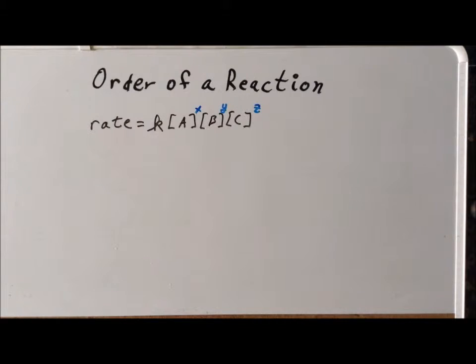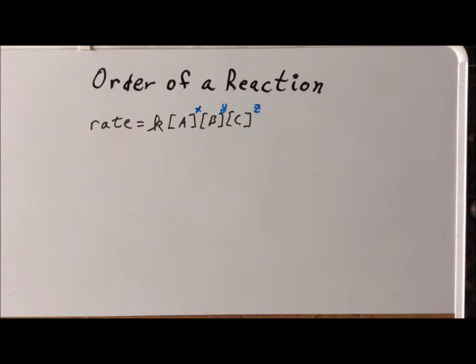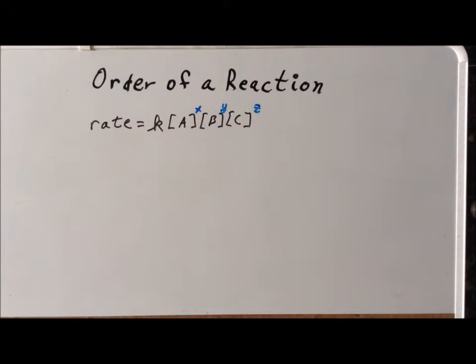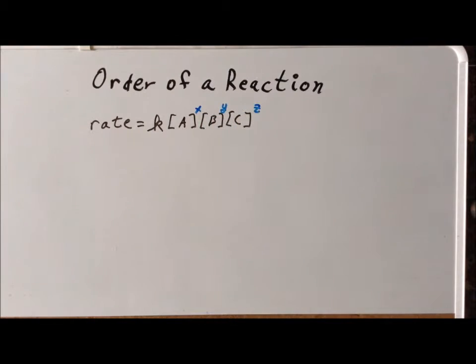It's important to note that the reaction order with respect to a particular reactant or to the entire reaction is an experimental concept. So the only way that we can find out the order of a reaction is by doing experiments. Now, the order of a reaction, if we know x, y, and z, we can compute that. We can just put x plus y plus z. So now we're going to show how we find the values of these individual x, y, and z, and how we can use those to better understand the reaction.